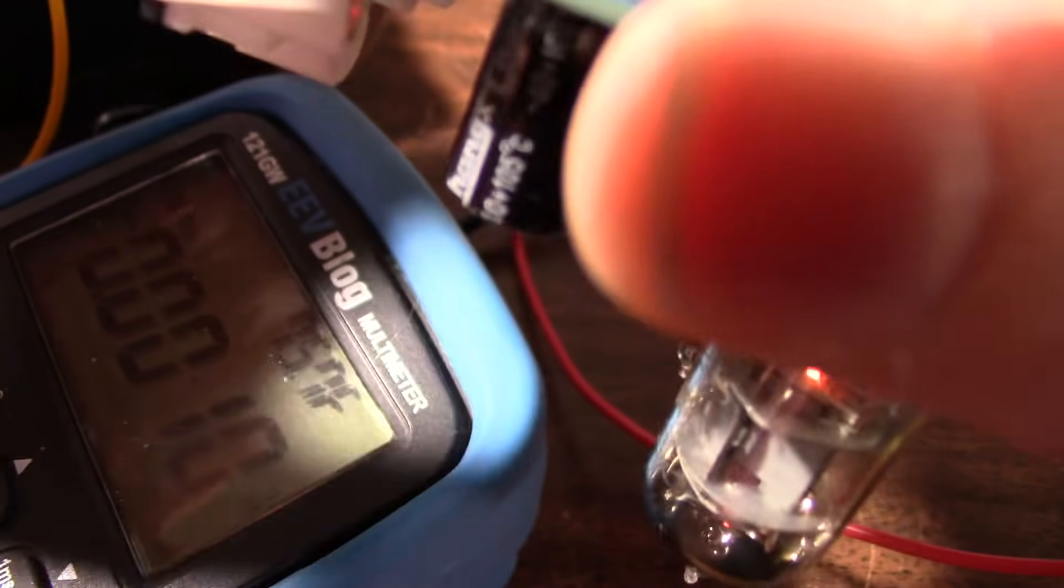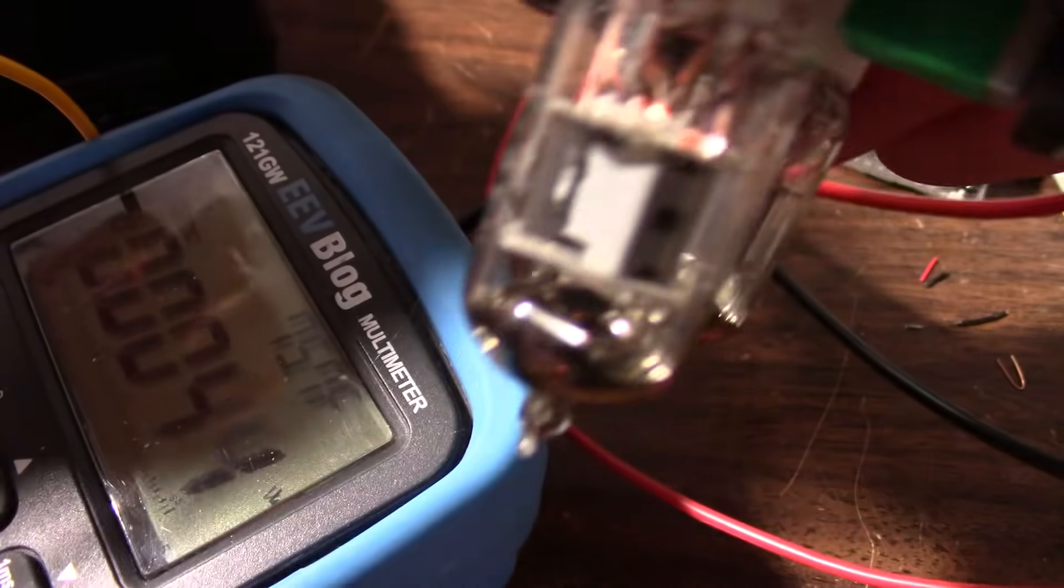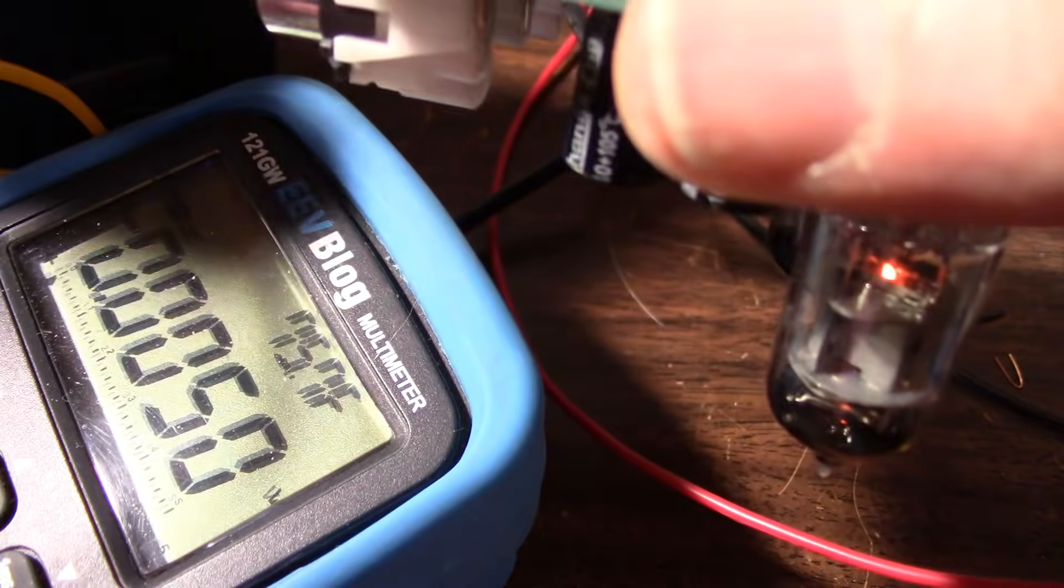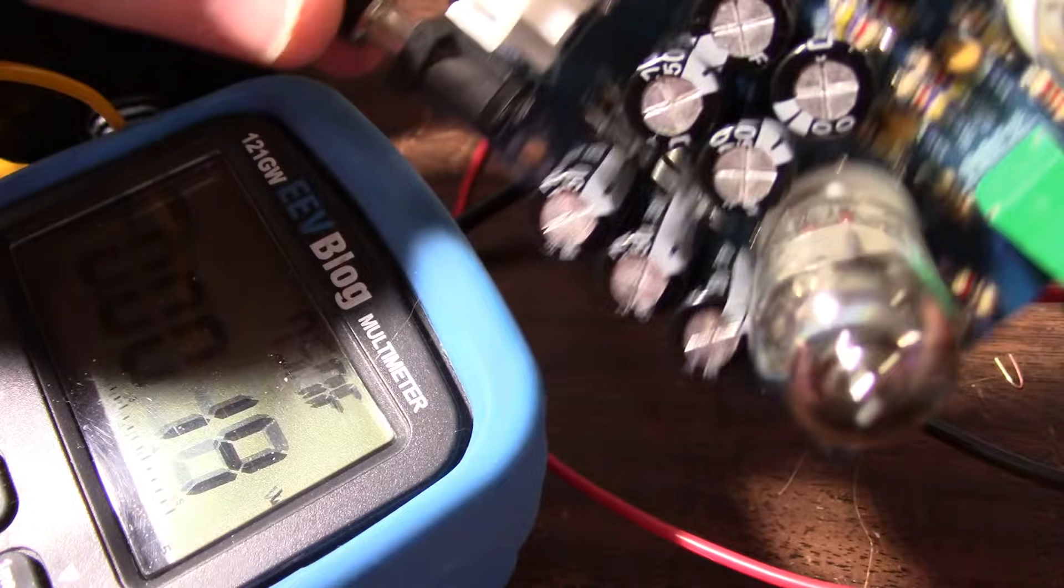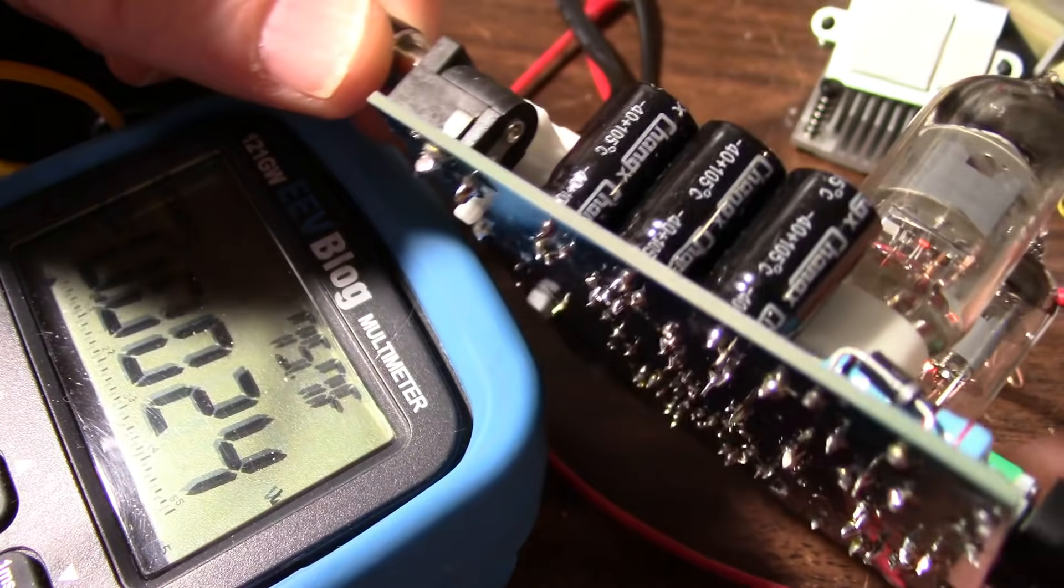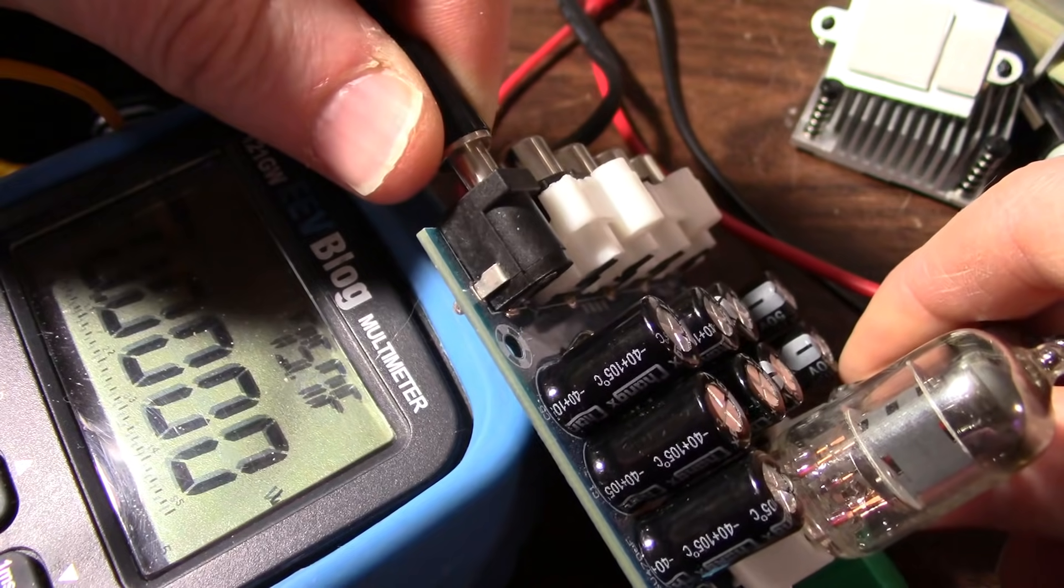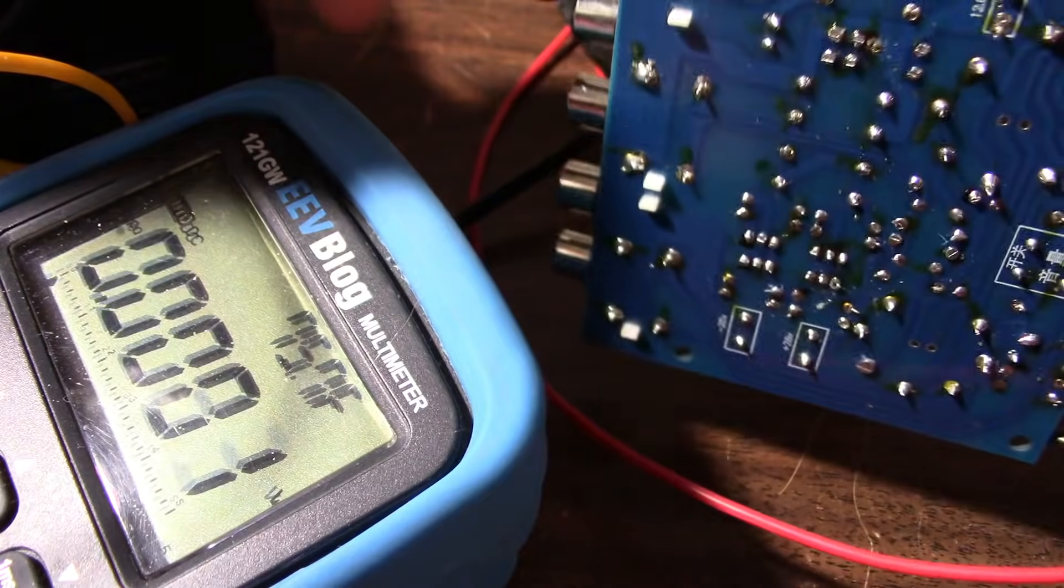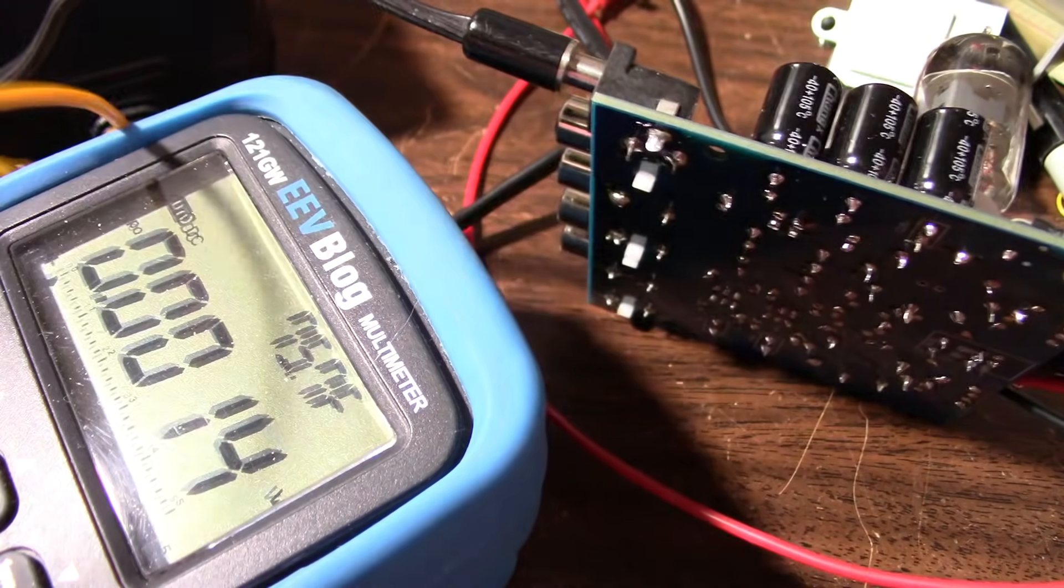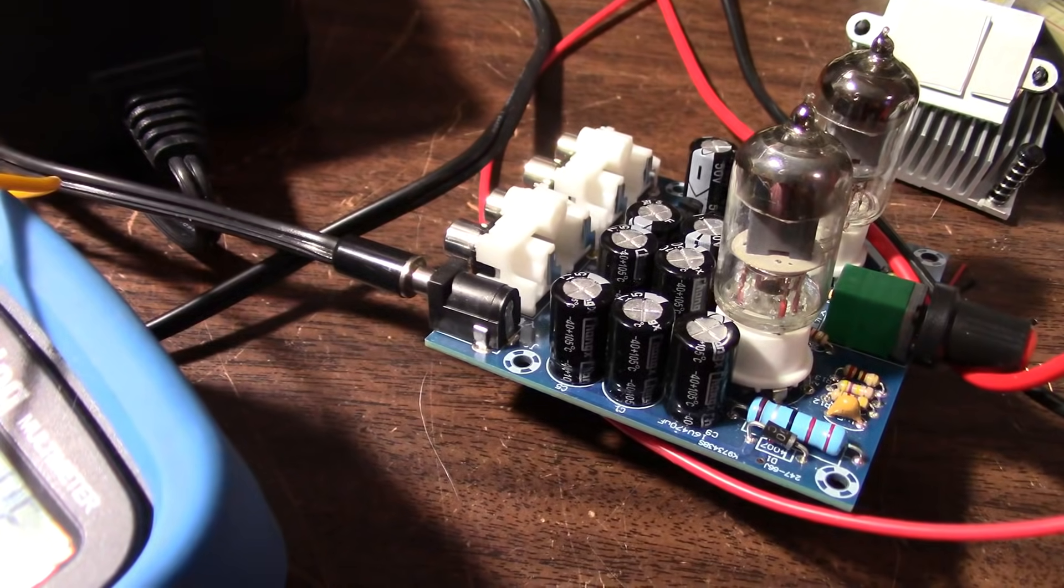We have tube filament action. I checked those voltages already. So we're getting about 6 volts per tube. This tube, though, is really bright. I don't know if you can see that. The one on this side is a little bit dimmer. They're both warm, though. So, you know, they're getting the proper filament voltage. I guess the next thing is to put some signal through there and see what happens.